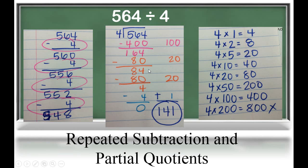When we subtract 80, we have 84 left over. So, we can subtract 80 again, which is equal to 20 more groups of 4. Now, we have 4 left over, which is equal to 1 group of 4. If we add up all of our partial quotients, 100 plus 20 plus 20 plus 1, we get 141 as our quotient.